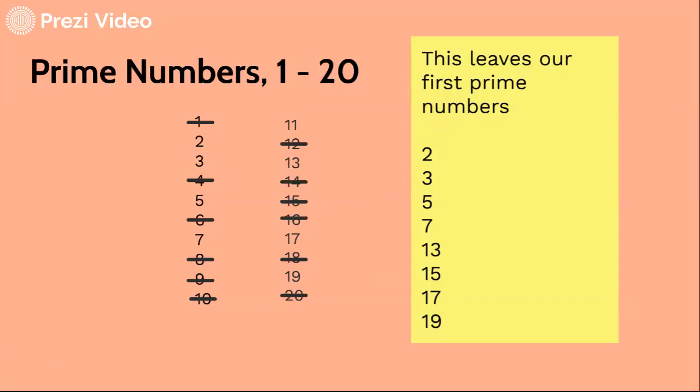This leaves our first prime numbers from the numbers 1 to 20: 2, 3, 5, 7, 13, 17, and 19. We can use these numbers to work out to use in prime factorization.